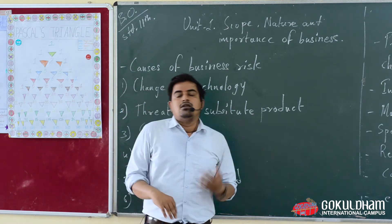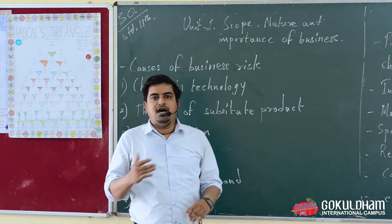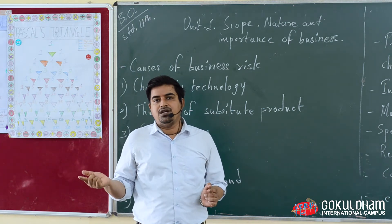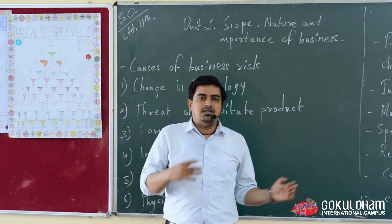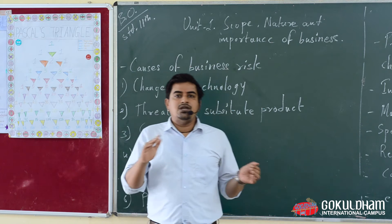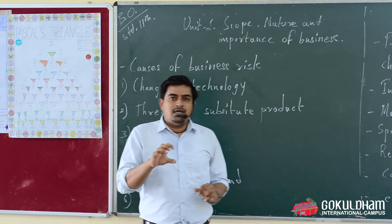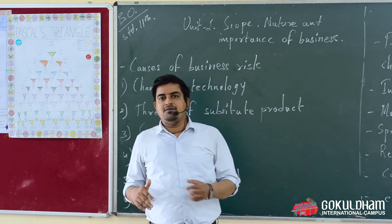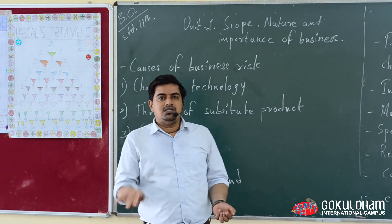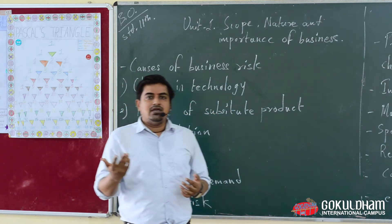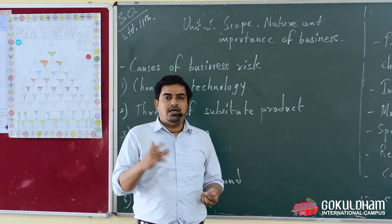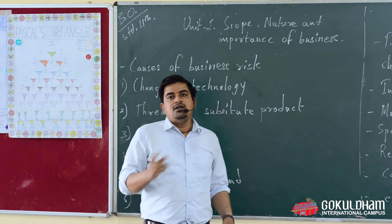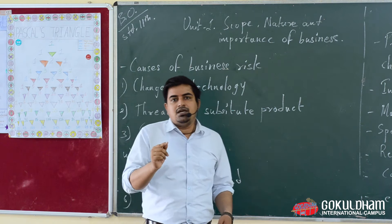Customers are quite influenced by change and look for substitute products. For example, as television was invented, people adopted it in place of radio. When steel vessels came into use, people started avoiding copper and brass vessels. Similarly, as ball pens became more popular, people reduced the use of fountain pens. So every product has a substitute product towards which the customer can divert. That is another risk associated with business.